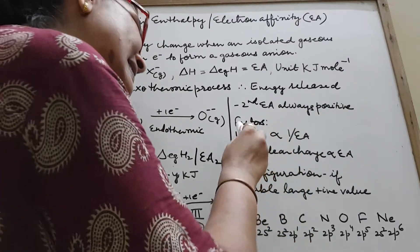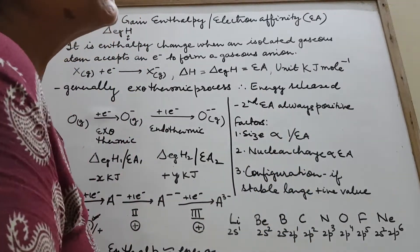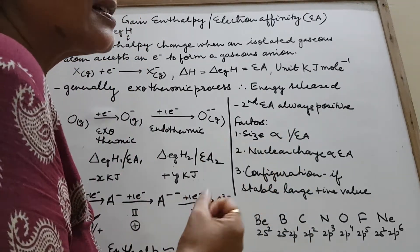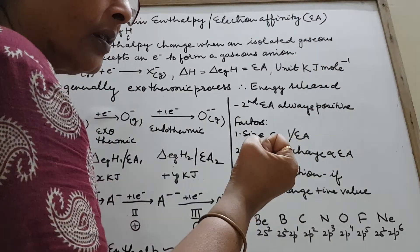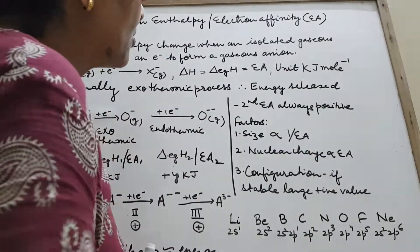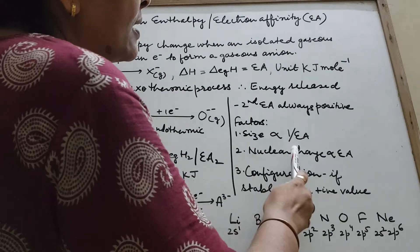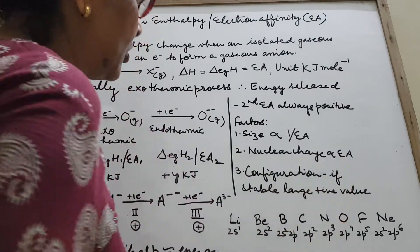The second factor is nuclear charge. If nuclear charge increases, it is easier to attract an electron, more energy is released. So nuclear charge is directly proportional to EA.